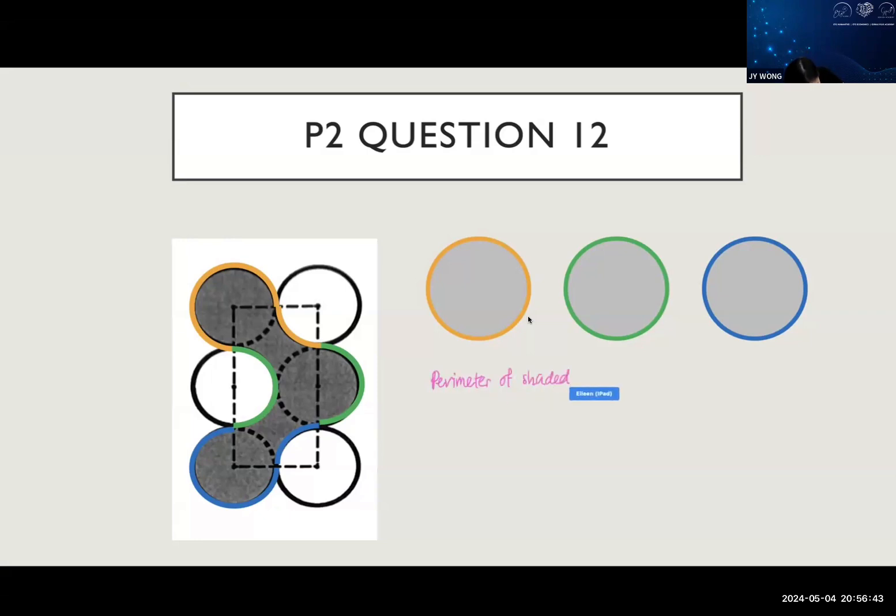To find the perimeter of the shaded part, we need three circles' circumference. The formula is π times d. The diameter is 7 times 2, which is 14. So perimeter equals 3 times π (22/7) times 14, which gives you 132 cm. This is a paper 2 question so you can use a calculator.